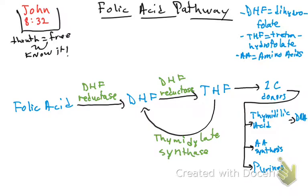Amino acid synthesis stops there — it doesn't go anywhere else. But purines go to two places: DNA and RNA. So basically, this is the folic acid pathway.